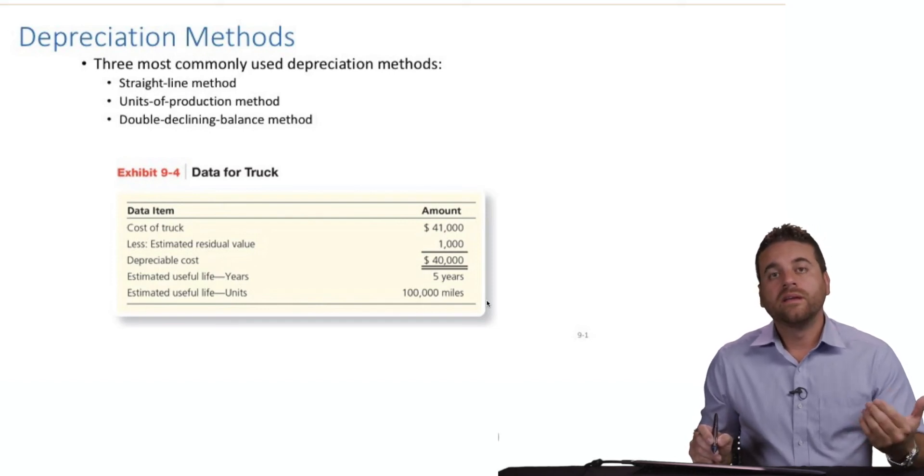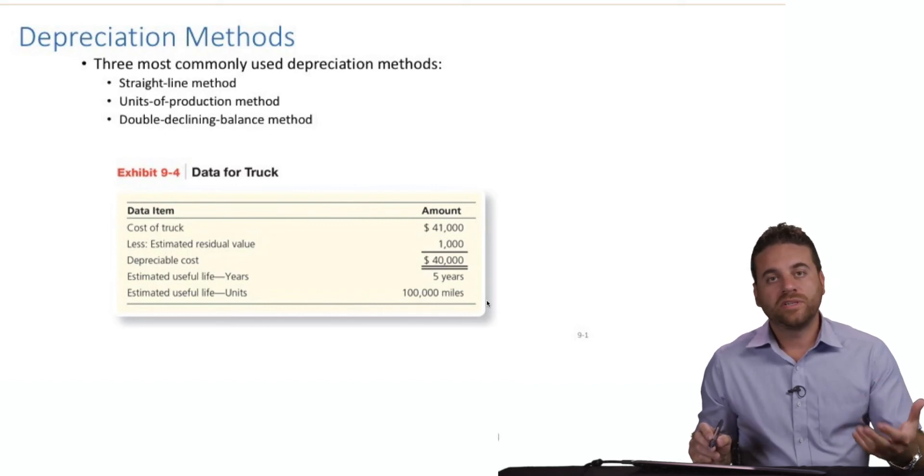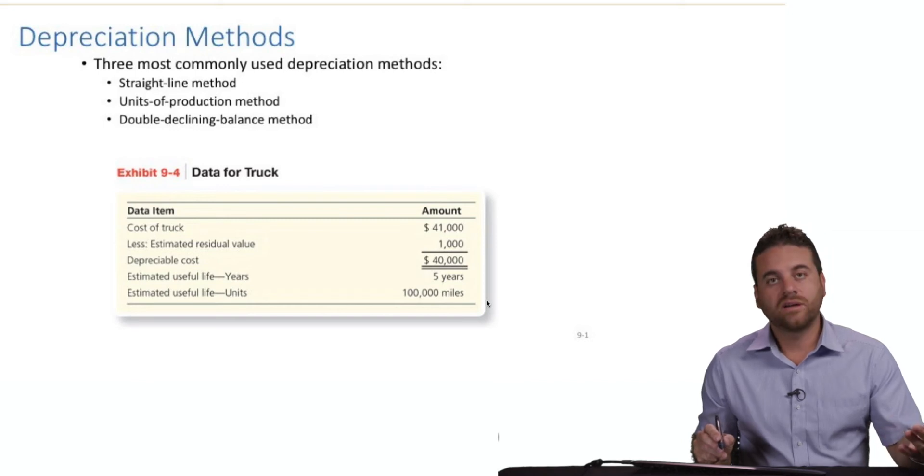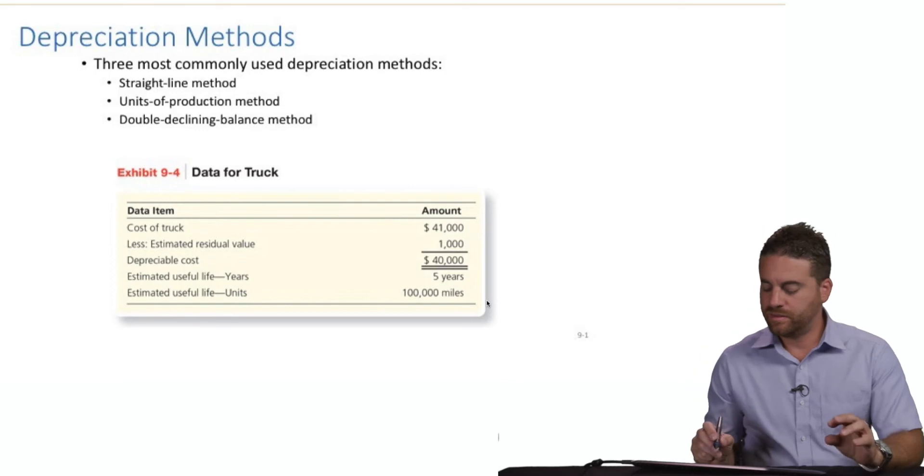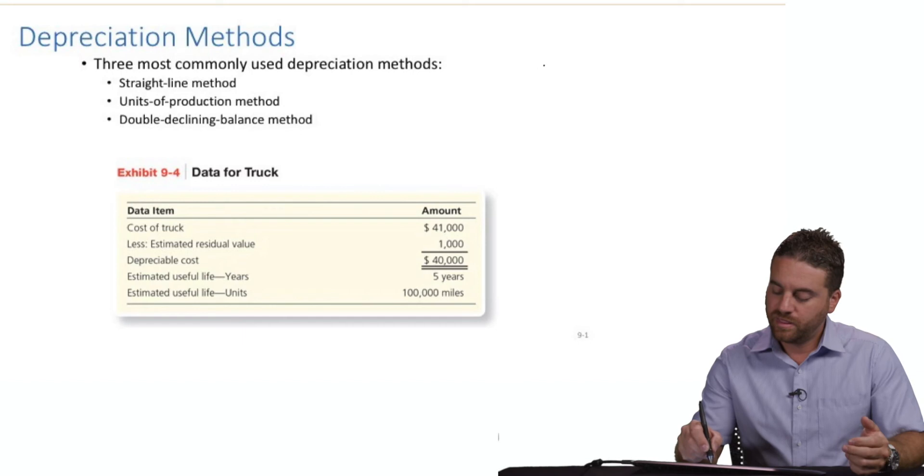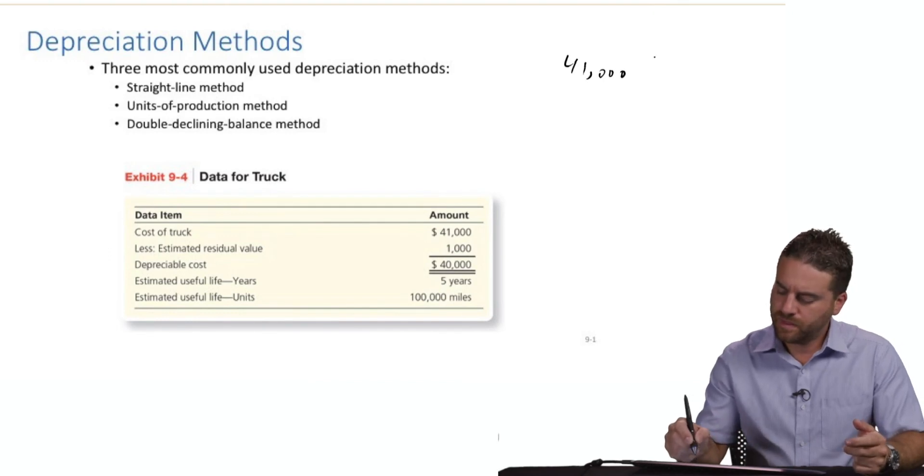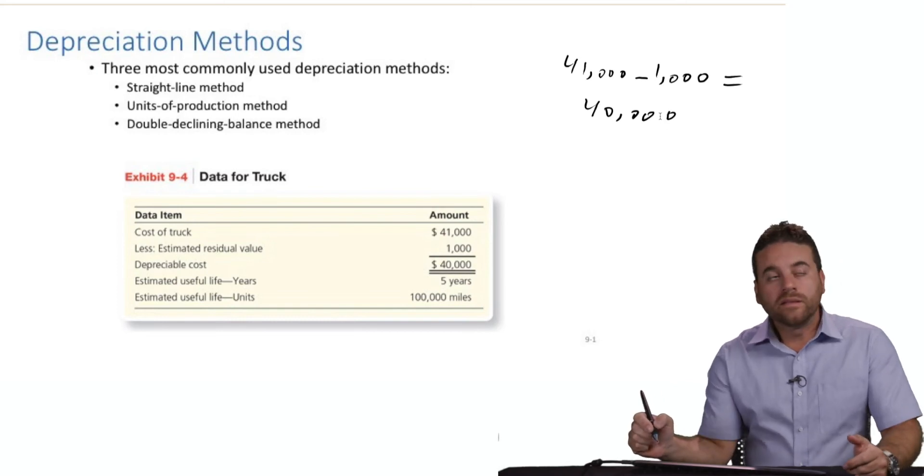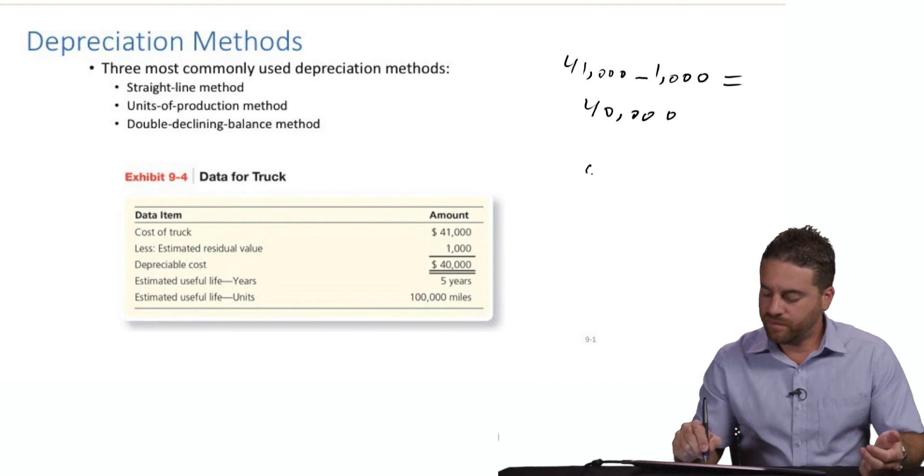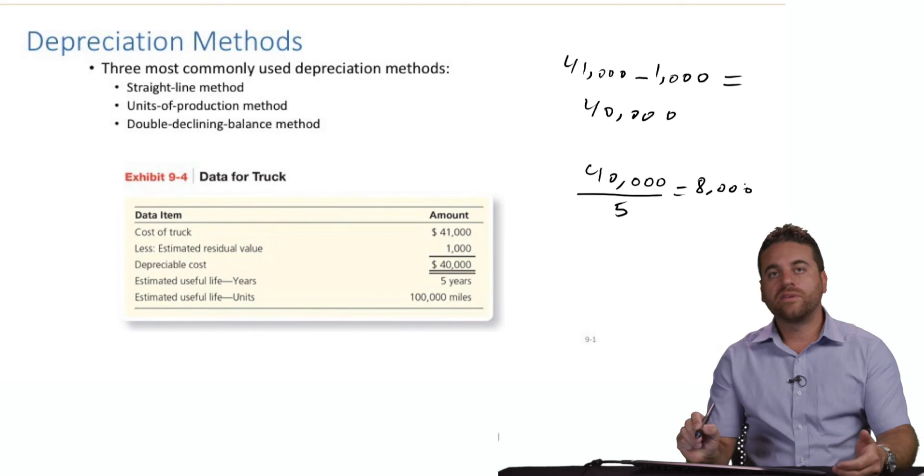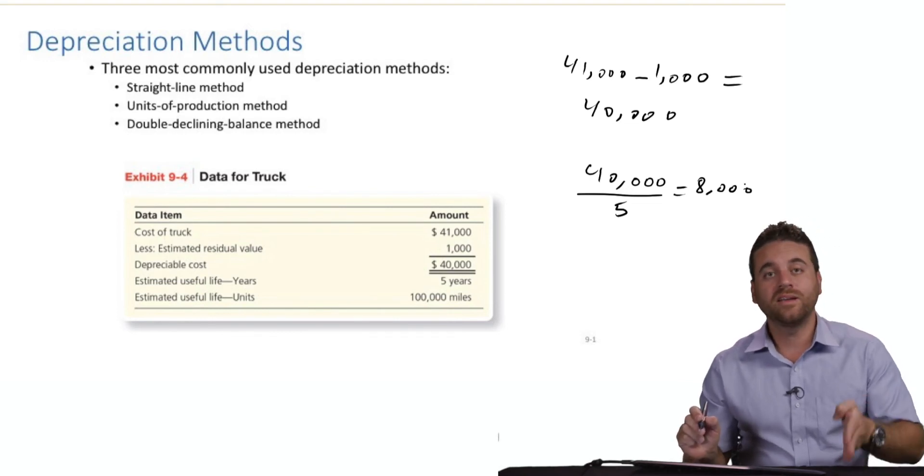The straight line method means that we're going to consider an equal amount of depreciation for every year of the five years. First step is to look at the original cost, the residual value, and the useful life, and figure out what will be the annual portion of that depreciation. The total depreciation is $41,000 minus the residual value, which gives us $40,000 in total. Then the $40,000 is for the five years, so the annual depreciation is $40,000 divided by five, which gives me $8,000 a year. Every year we have $8,000 of depreciation. It's a straight line method, so every year we have an equal amount.